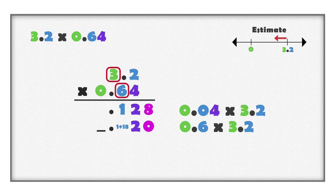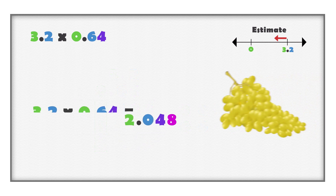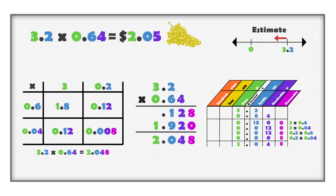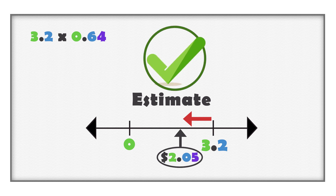We already have one tenth. Eighteen more makes a total of nineteen tenths. One group of ten tenths is one. Nineteen tenths is the same as one and nine tenths. Add all the values, remembering to add digits of the same place value together. The product is two and forty-eight thousandths. This value still shows the total cost of the grapes, which rounds to two dollars and five cents.